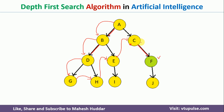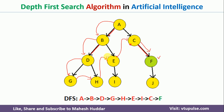E is also not a goal node. So it will go back to C, and C is not a goal node either, so it will further travel and reach node F. The final path to reach F looks like this: A to B, B to D, D to G, G to H, H to E, E to C, and C to F. This is how the Depth First Search algorithm works.